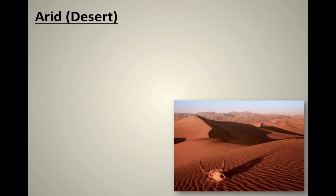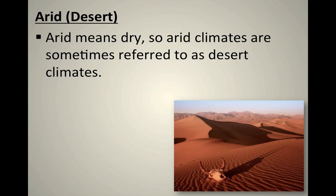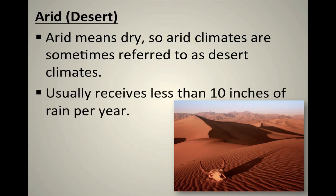Next, we have arid or desert climate. Arid means dry, so arid climates are sometimes referred to as desert climates. Desert or arid climates usually receive less than 10 inches of rain per year — that's what qualifies it as a desert or arid climate. If it's getting less than 10 inches of rain, that's pretty dry.